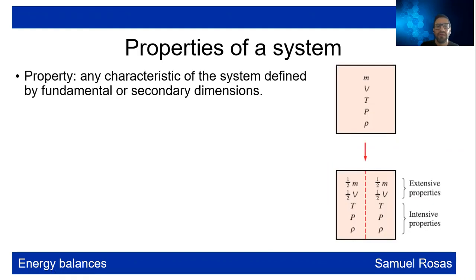The properties of a system is any characteristic of the system that is defined by the fundamental or secondary dimensions. It could be mass, volume, temperature, pressure, density.